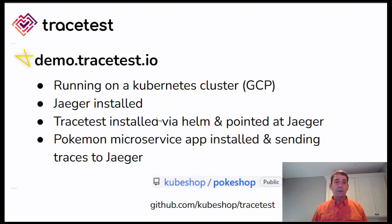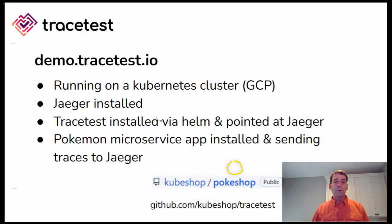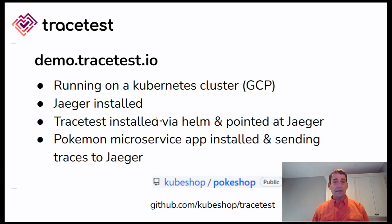We're going to be using demo.tracetest.io, which is available publicly. It's running in GCP, so just a regular Kubernetes cluster. We do have Jaeger installed, and we have our Tracetest app installed. We just use a simple Helm command to install it and point it at that Jaeger instance. We wrote a microservice based on the Pokemon API, and it's actually got two microservices to it. Both of those are sending their trace information to Jaeger.